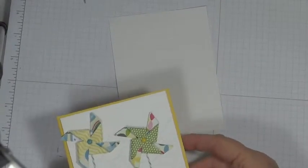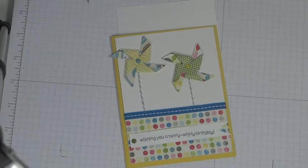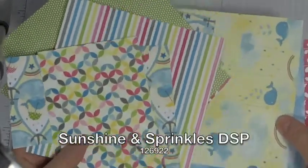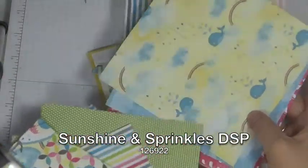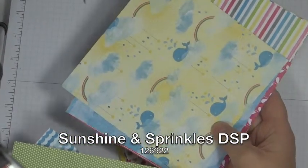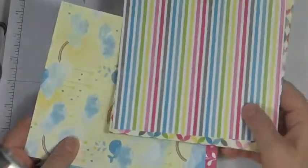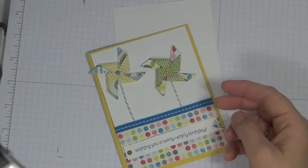So I've got that piece done and then at this point I'm going to want to make my pinwheels. So I took some designer series paper and this is just a selection of some of the papers from the Rain and Sunshine and Sprinkles DSP. And because they're both two-sided it was real easy to make the pinwheels.